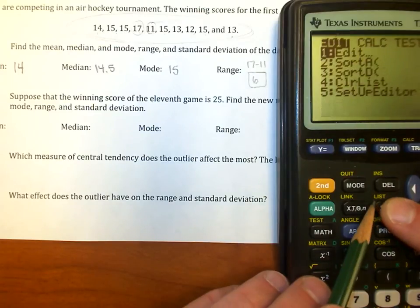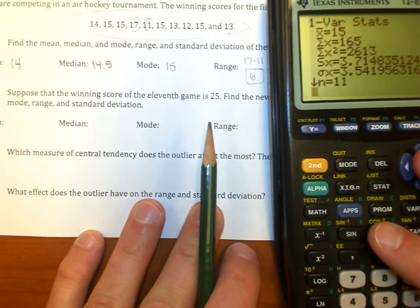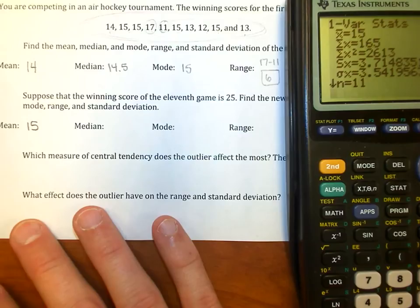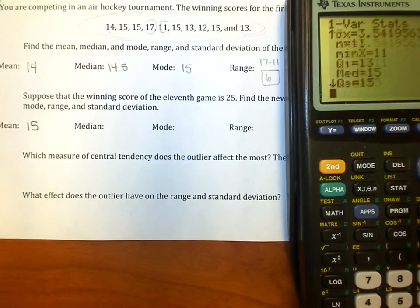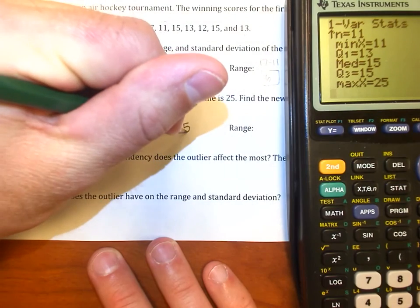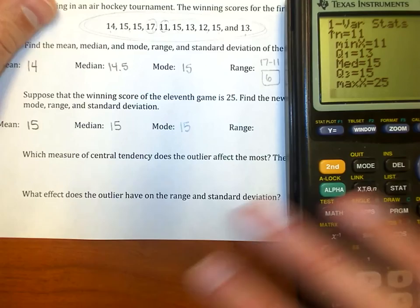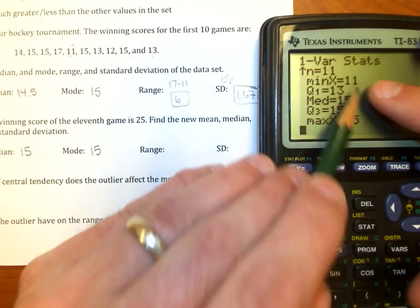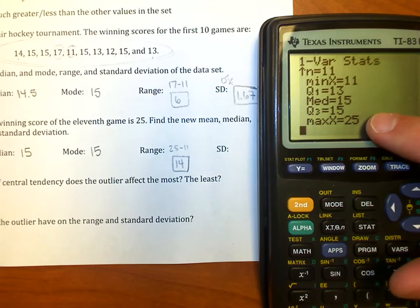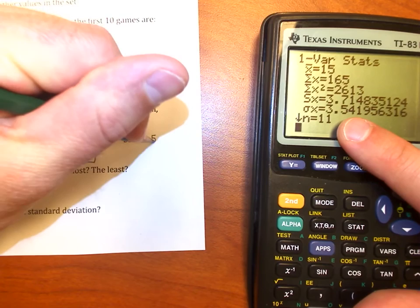I'm going to go back into stats, over to the calculate menu, and I'm going to do some one variable statistics again. So I'm going to repeat that and notice how things change. Now the mean value is now 15, so it went up by one. That makes sense. You added 25 in. That's a large value. I scroll down a little bit. The median value is now 15. The mode is also 15 because that doesn't change. I went through and they've still got five times or four times that 15 occurs. Now as far as my range goes, the range now goes from 11 to 25, so I take 25 minus 11. The range is now 14 values, and the standard deviation is now, look at that, it jumped up. It's 3.54.